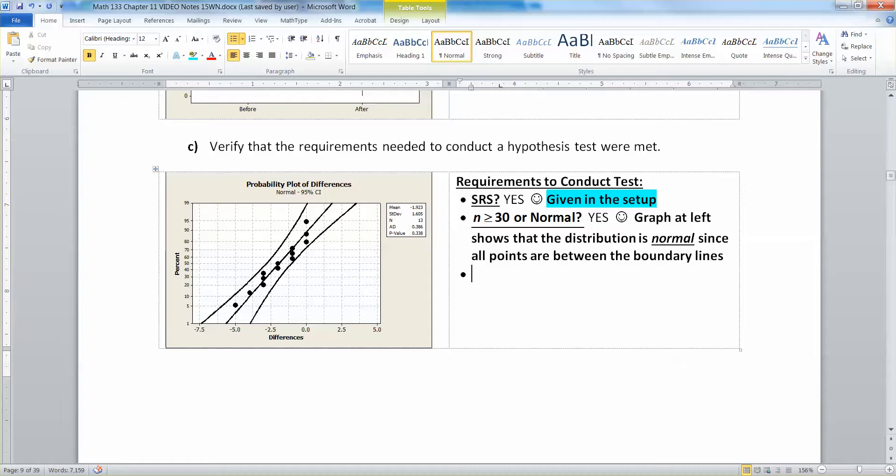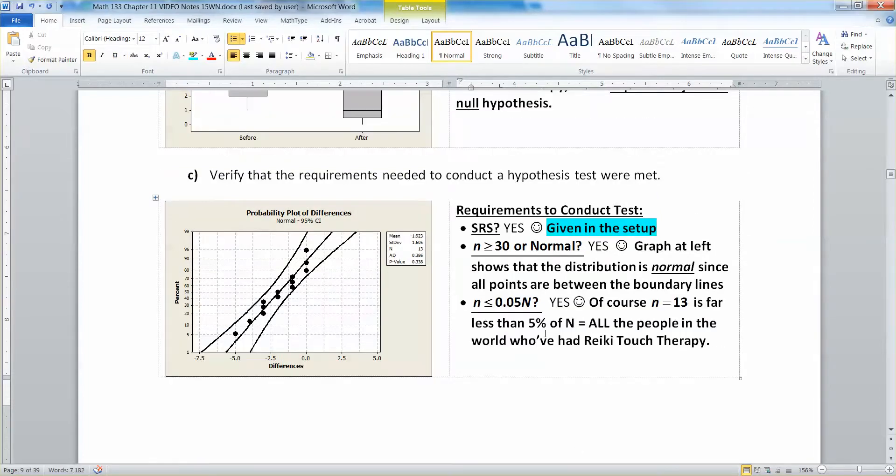The last thing is kind of a hand wave magician job because we need little n to be less than or equal to 0.05 capital N. You need those 13 people to be less than 5% of all the people in the world that have had Reiki touch therapy, which of course it must be. Reiki touch therapy has been around for a long time, so there's been a lot of people that have had it. Our little sample of 13 is far less than that. This is a bit of a magician's trick - you're waving your hands at it saying ta-da, because of course it has to be the case.